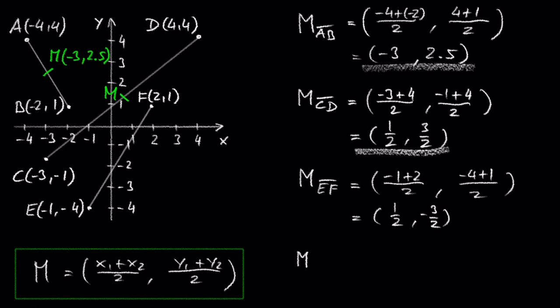So, the midpoint of E and F is 1.5, comma negative 3.5.